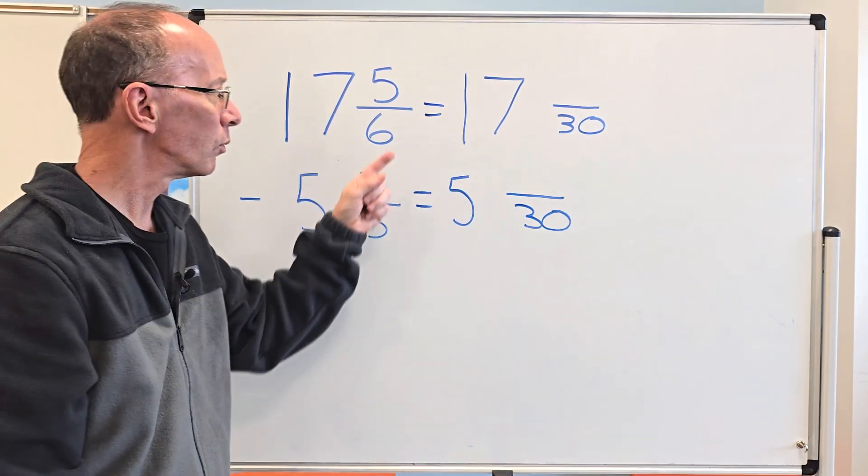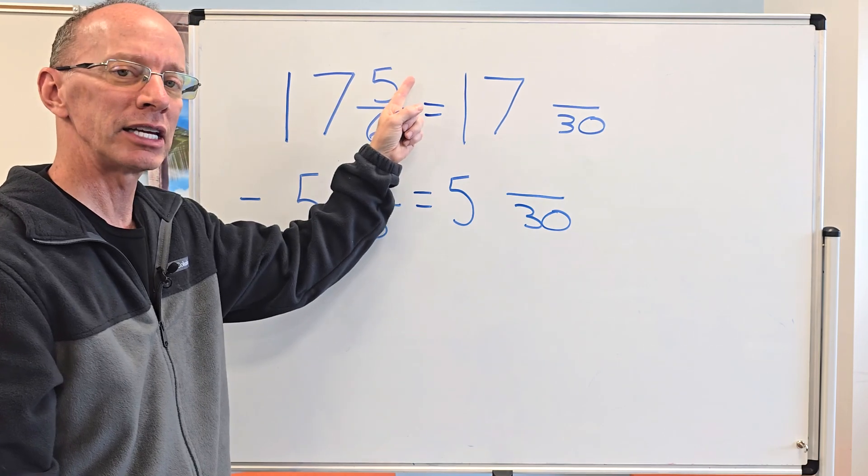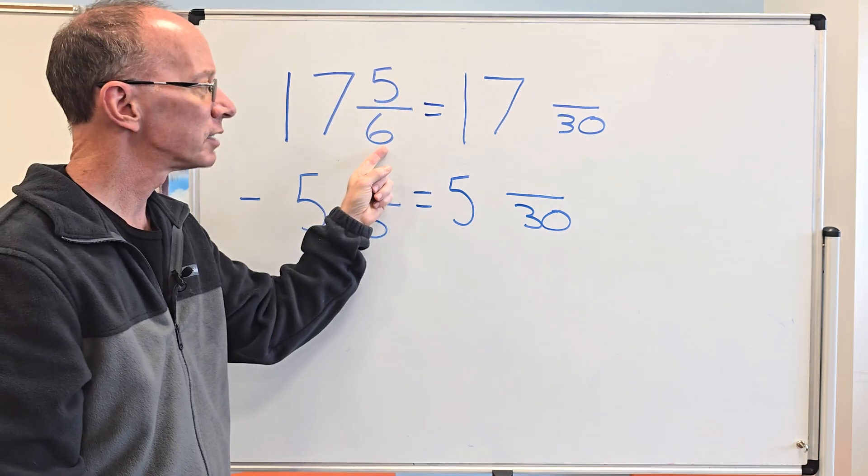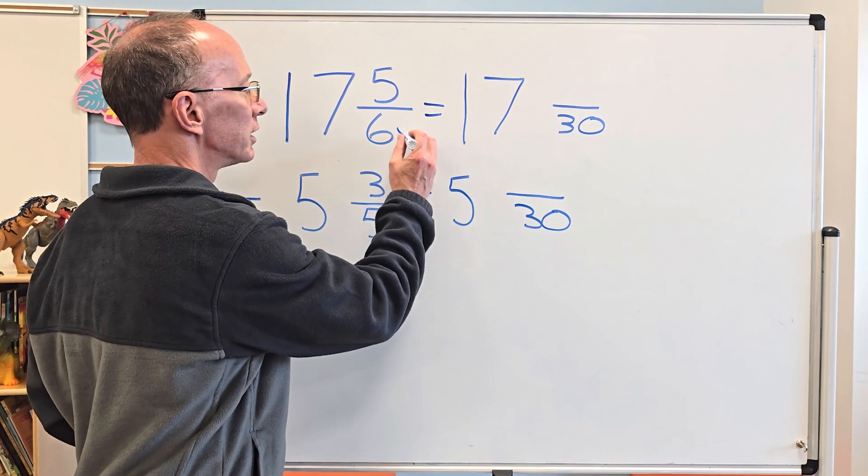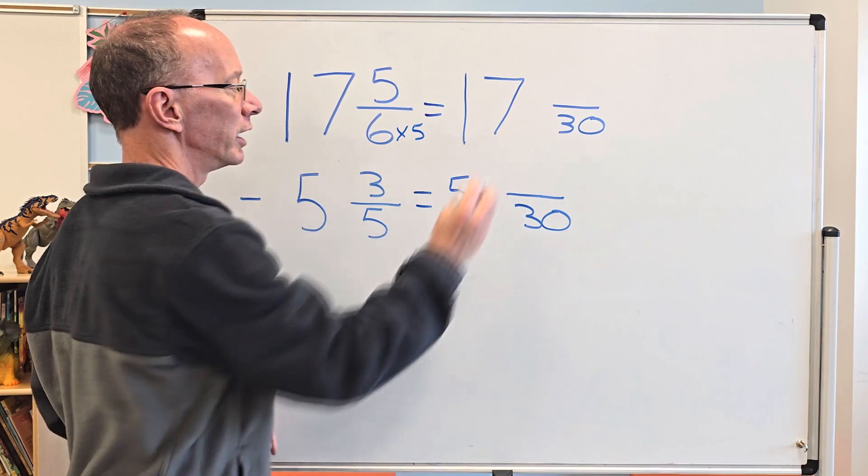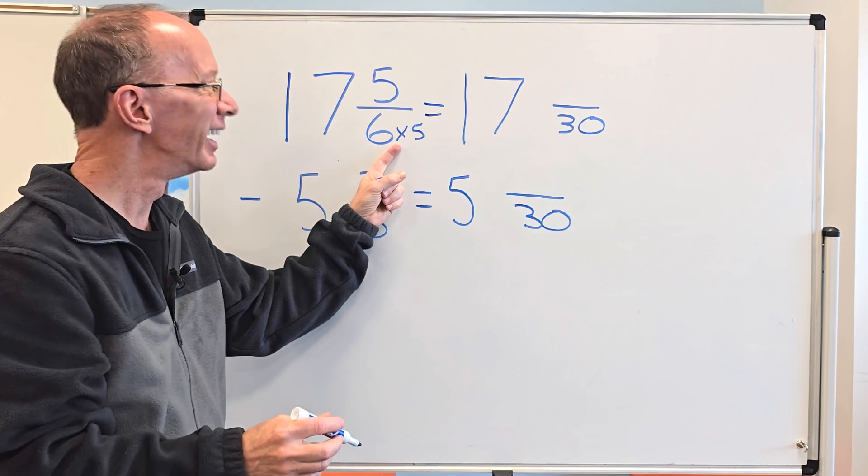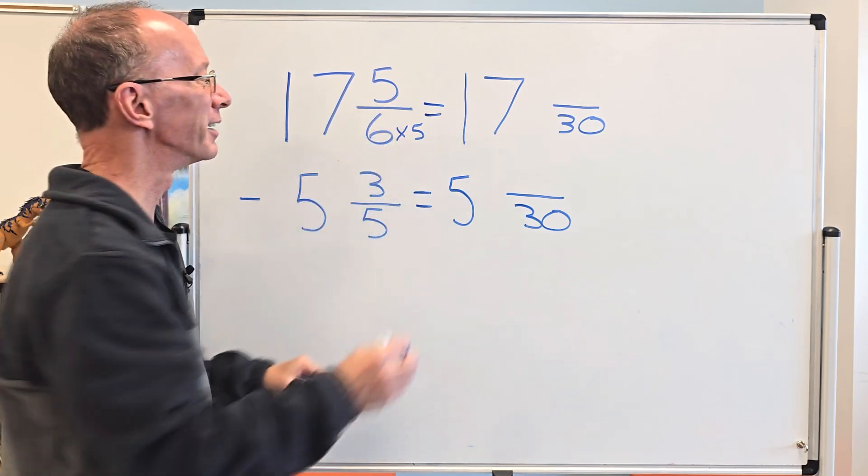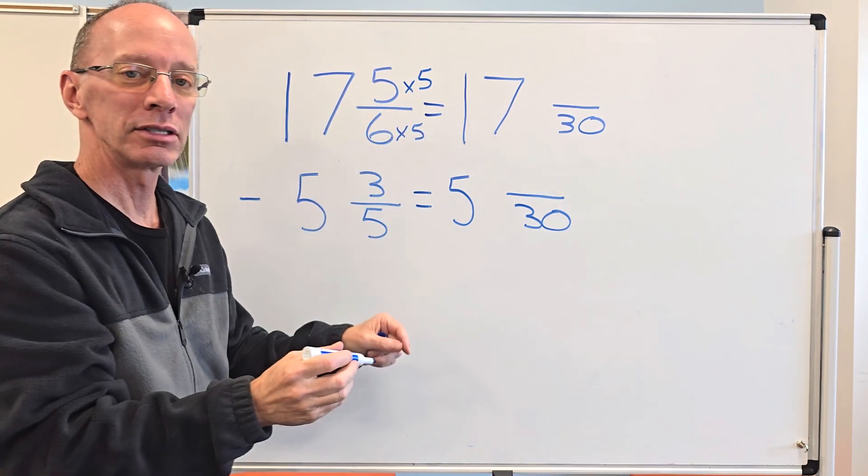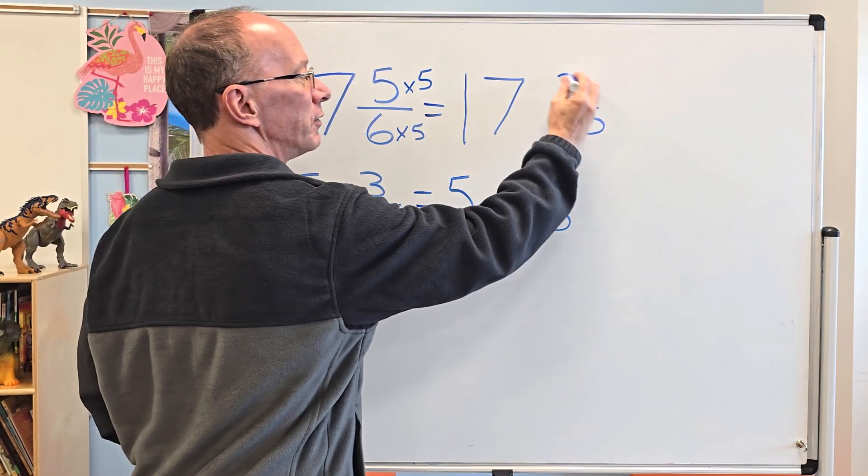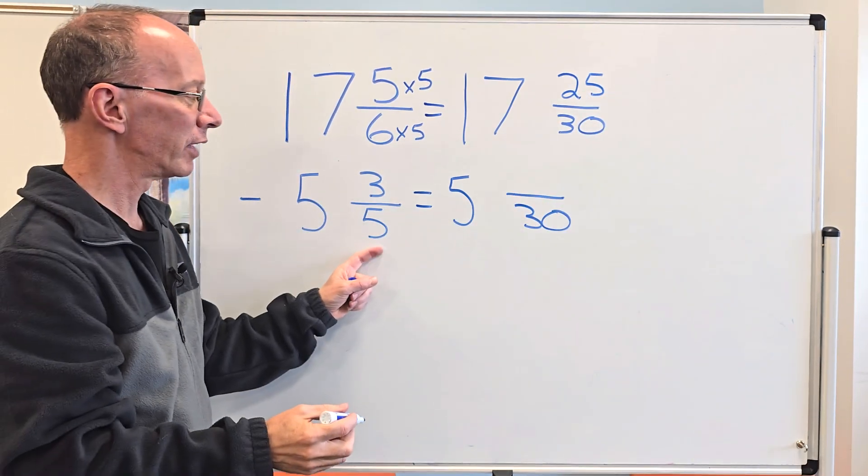There's a little trick here. Whatever I do to the denominator, I need to do the exact same thing to the numerator. 6 times what equals 30? 6 times 5 equals 30. So whatever I do to the denominator, I have to do the same thing to the numerator. 5 times 5 equals 25, so I put 25 right here.